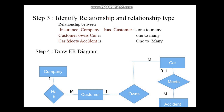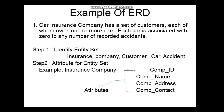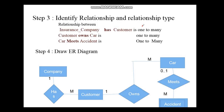Step 3 is to identify relationships and relationship types. From the question: insurance company has a set of customers — 'has' is the relationship, and it is a one-to-many relationship between insurance company and customer. Customer owns car — 'owns' is the relationship, and the type is one-to-many. Car meets accident — 'meets' is the relationship, and the type is also one-to-many.